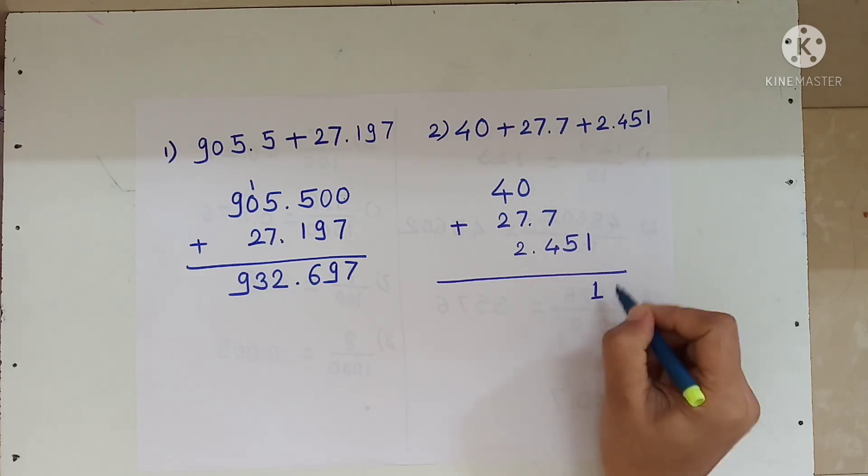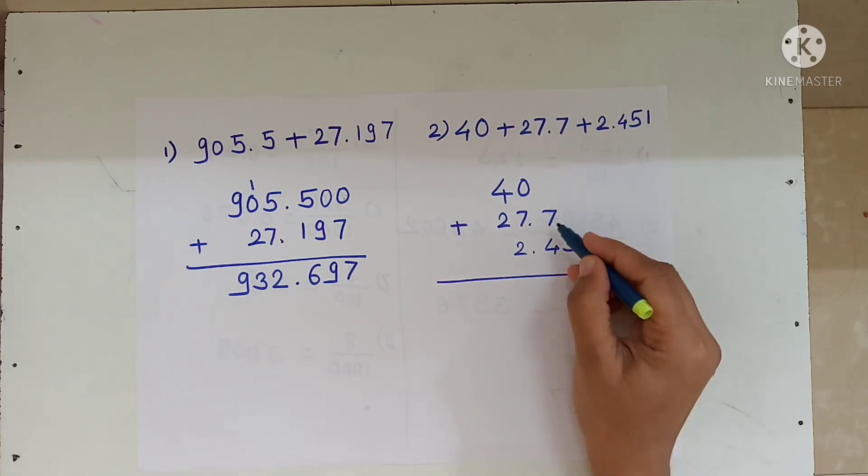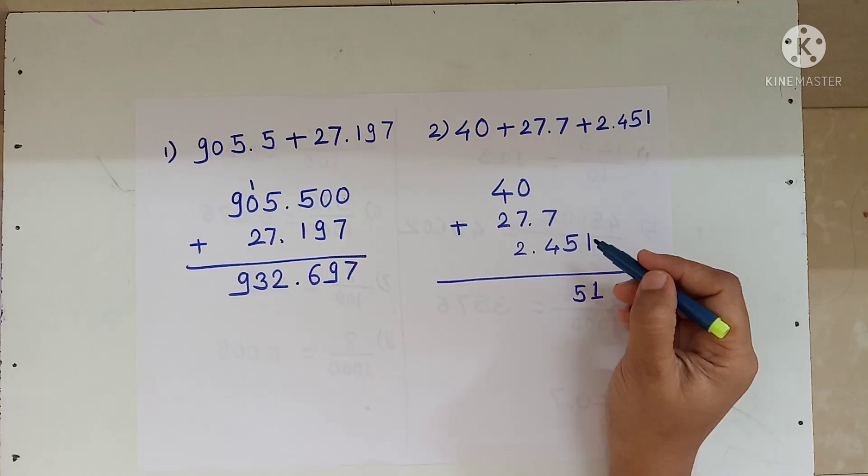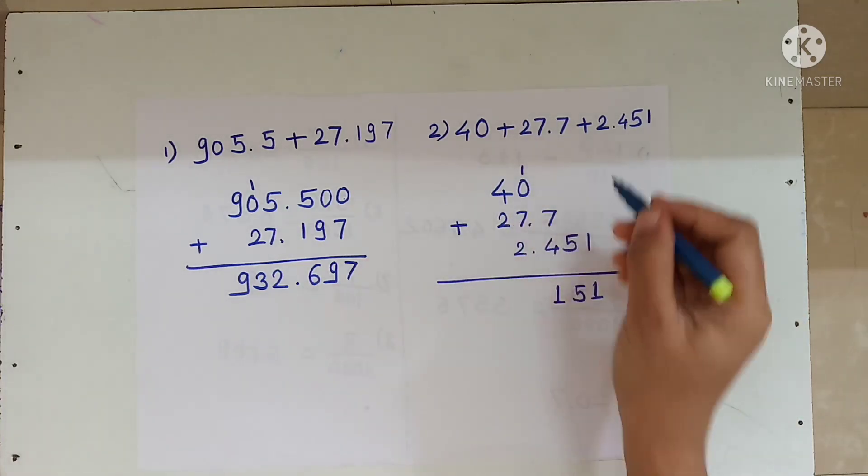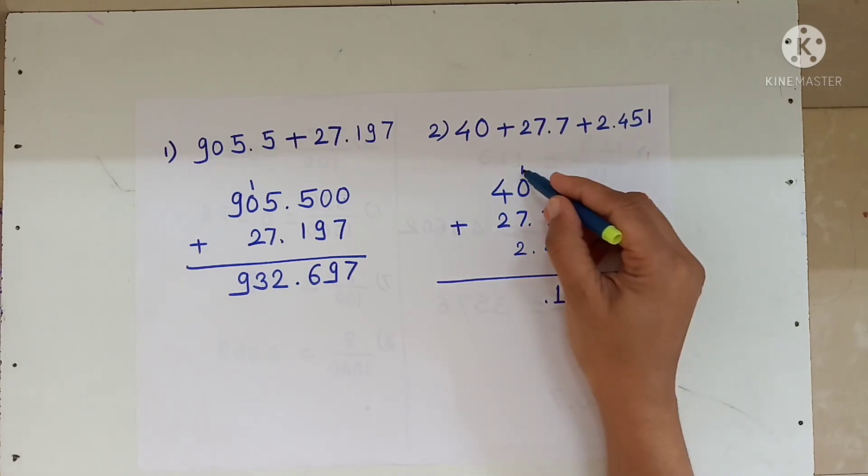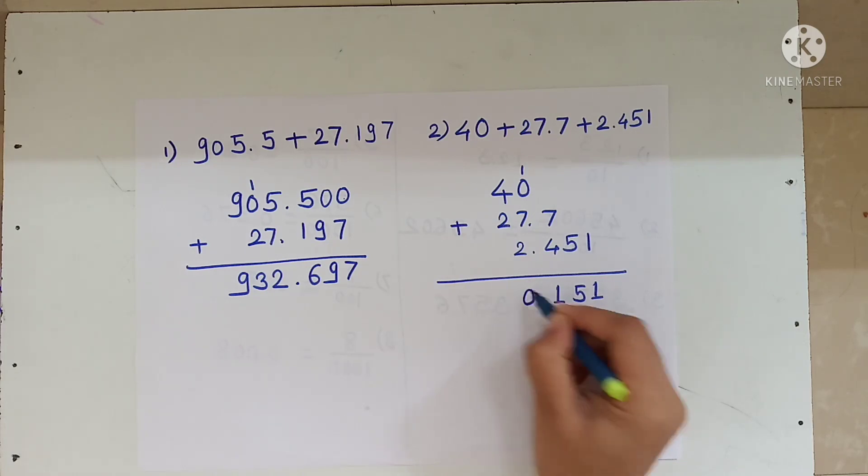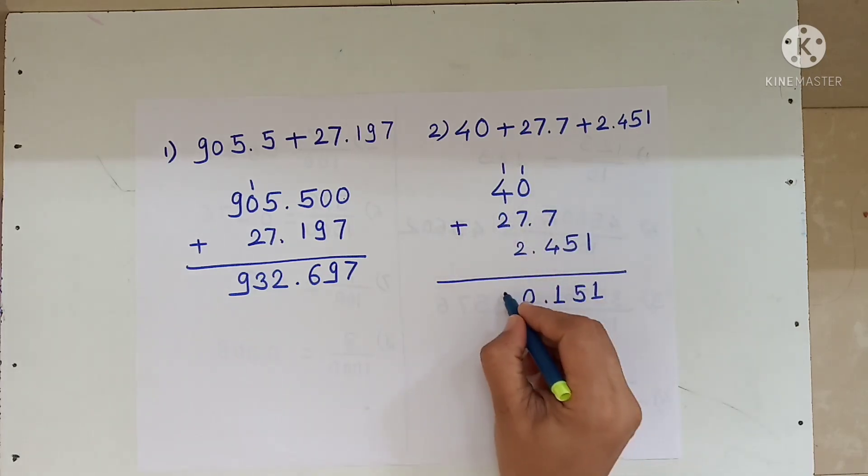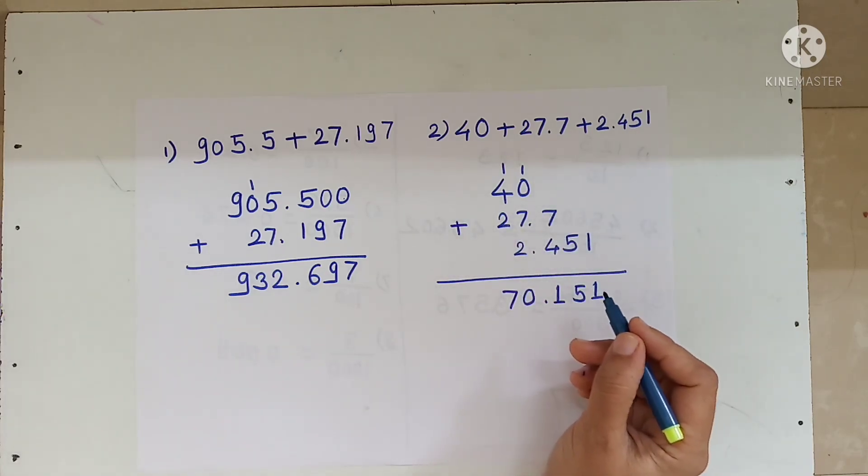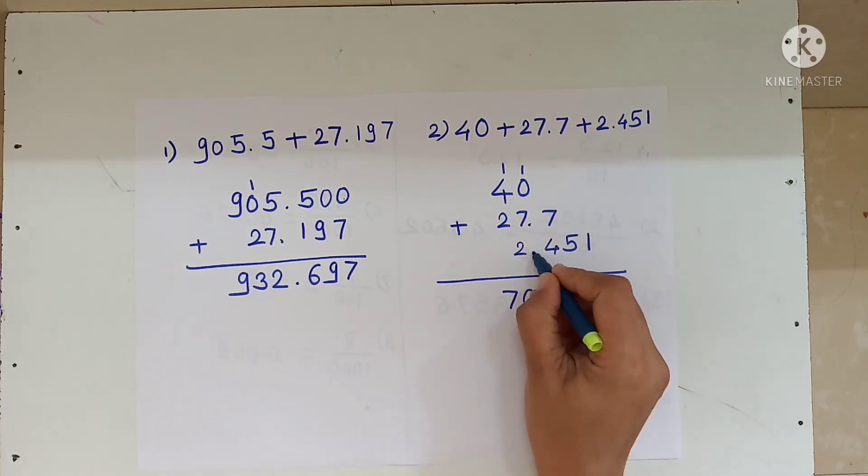1 stays as is, 5 also. 7 plus 4 is 11. We carry 1. 1 plus 7 is 8, 8 plus 2 is 10. We carry 1 again. 1 plus 4 is 5, 5 plus 2 is 7. In this way, we have to add decimal fractions.